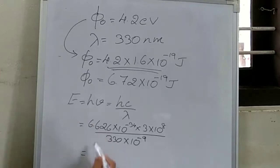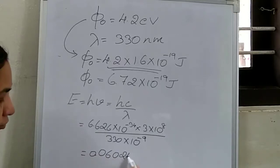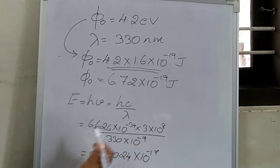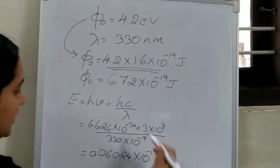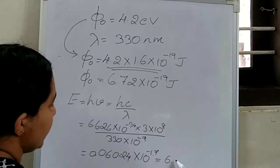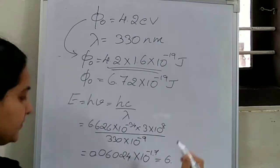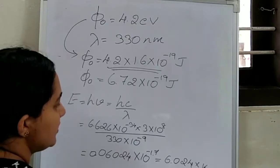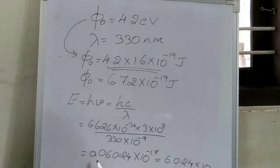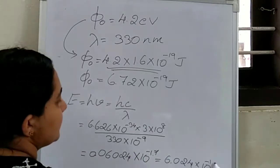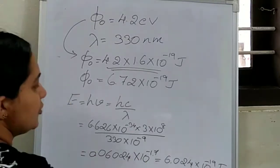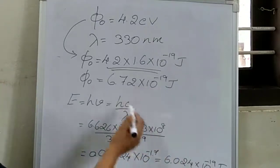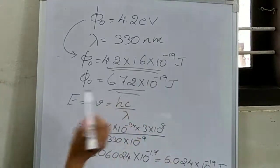On simplifying this, we will get it as 0.06024 into 10 to the power of minus 17, or which is equal to 6.024 into 10 raise to minus 19 joule. We made both as 10 raise to minus 19 for the comparison.